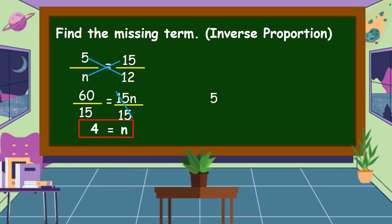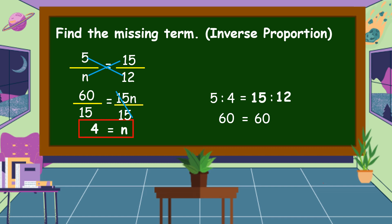Let's check: 5 is to 4 is equal to 15 is to 12. We multiply the extremes and means: 5 times 12 is 60, and 4 times 15 is 60. The equation is balanced, so our answer is correct. Why is this called an inverse proportion? If 5 is x and 4 is y in one equation, and 15 is x and 12 is y in the other — as x increases, y decreases. Therefore, this is an example of inverse proportion.